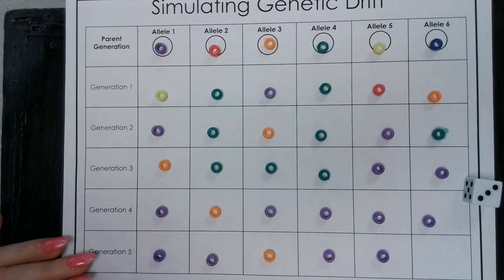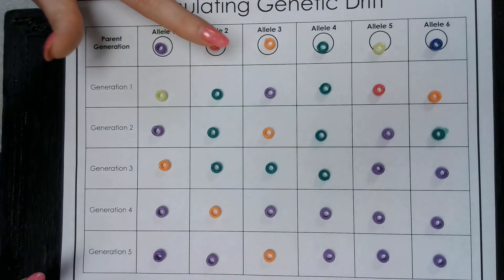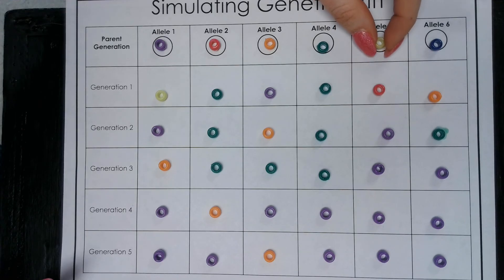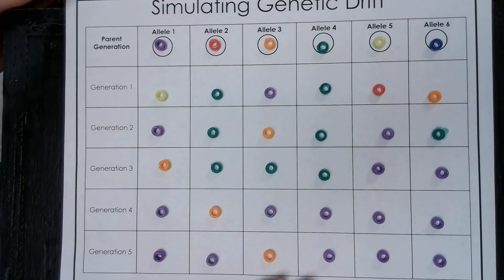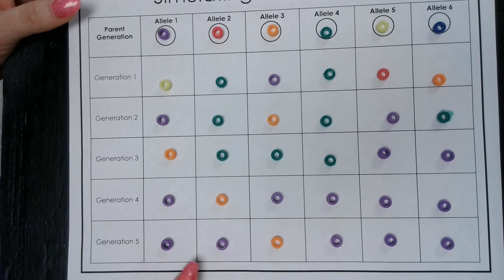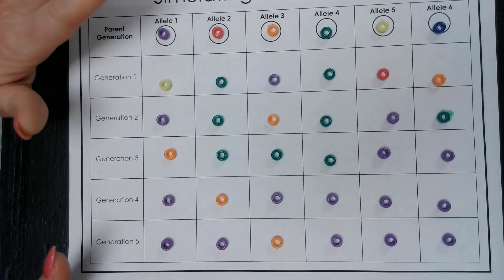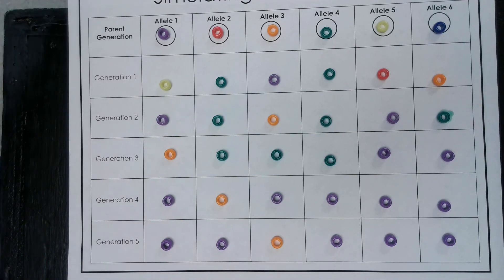So this is the perfect snapshot of genetic drift. These random events have wiped out some of the alleles that we started with, and we can see over time how the population has changed. We don't have a lot of genetic diversity now in our fifth generation. Pause the video and use this information to complete the rest of your chart and your analysis questions.